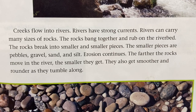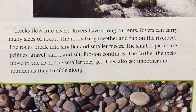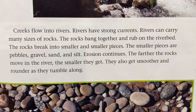Creeks flow into rivers. Rivers have strong currents and can carry many sizes of rocks. The rocks bang together and rub on the river bed, breaking into smaller and smaller pieces. The smaller pieces are pebbles, gravel, sand, and silt. Erosion continues — the farther the rocks move in the river, the smaller they get. They also get smoother and rounder as they tumble along.